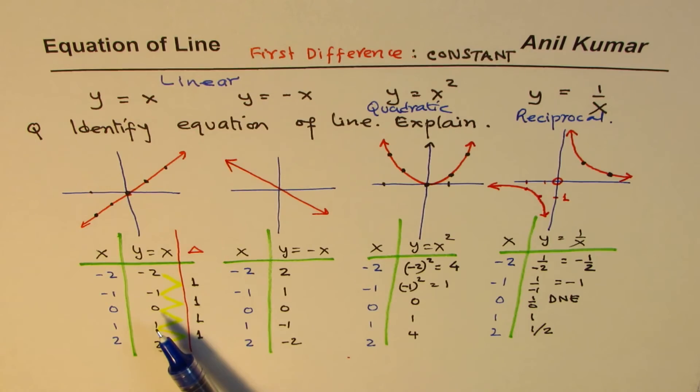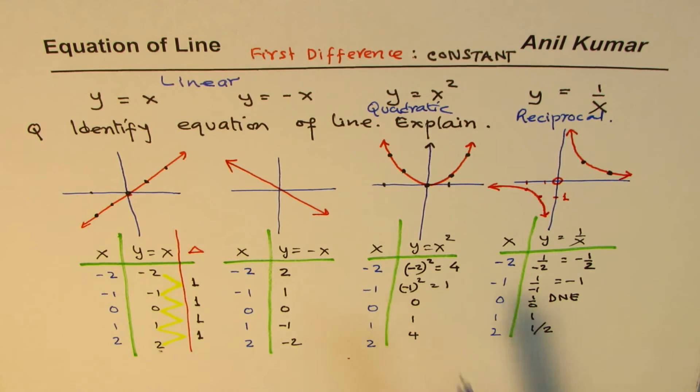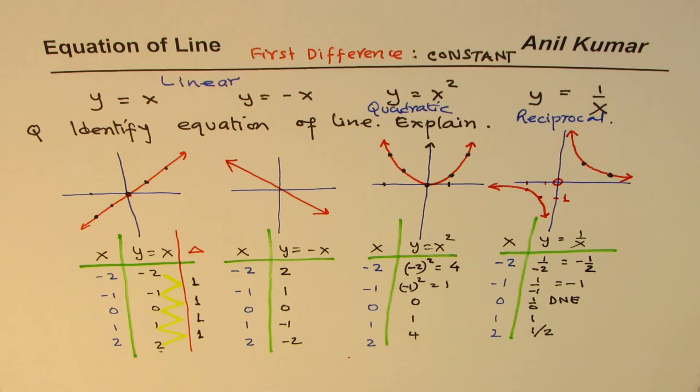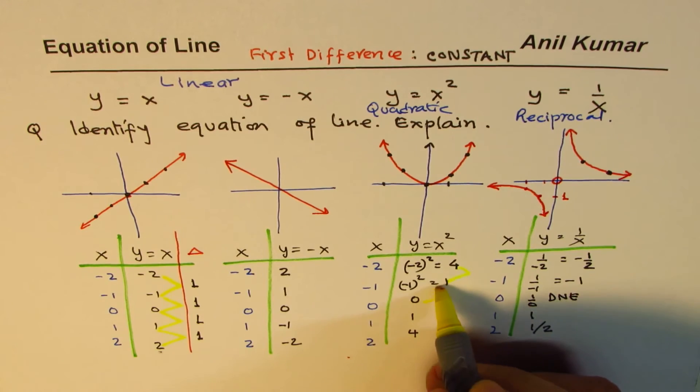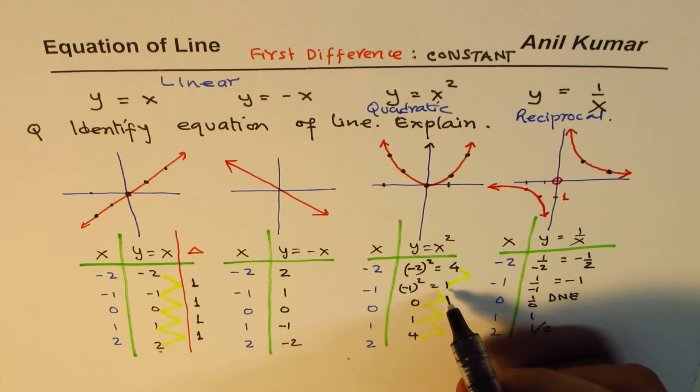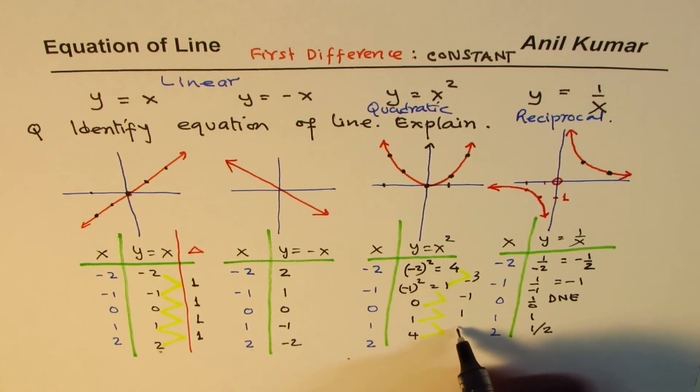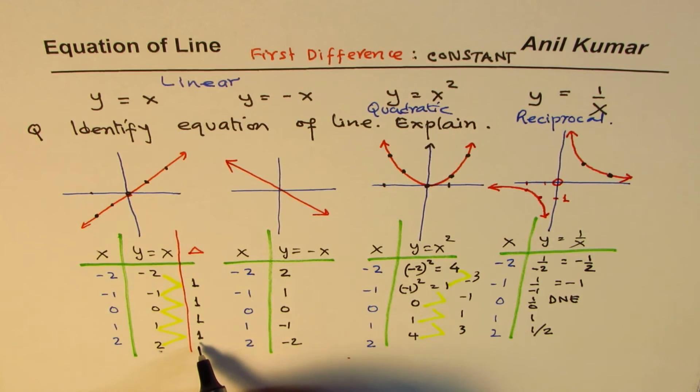Now, as an exercise, what you can do is you can also test the first difference. So in this case, I am saying it is not a line. So let's find the difference between these numbers and see what do we get. You get 1 minus 4 is minus 3. 0 minus 1 is minus 1. 1 minus 0 is 1. And 4 minus 1 is 3. All these numbers are different. They are not constant as we saw in the case of a line.